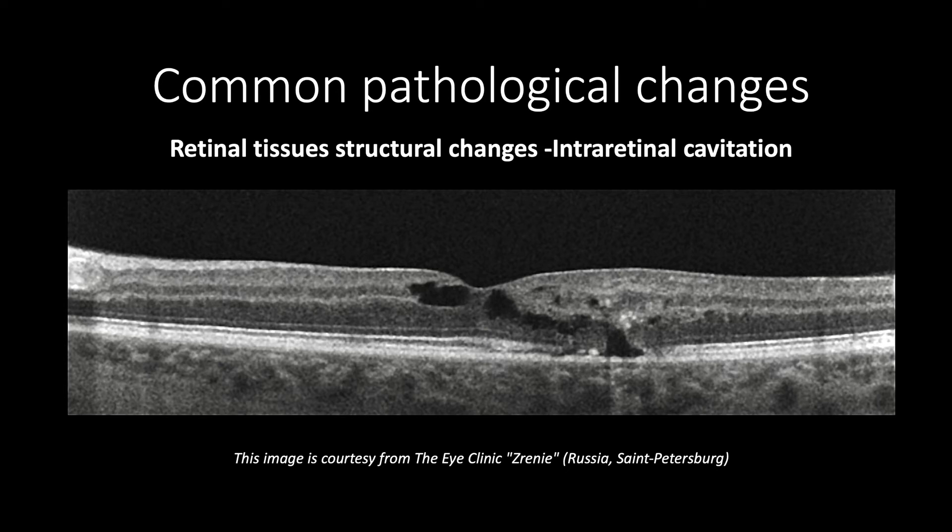This OCT cross-section shows intra-retinal cavitation with normal retinal thickness due to macular telangiectasia type 2.